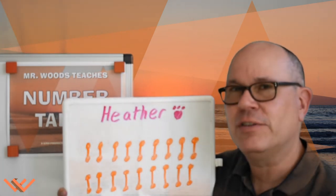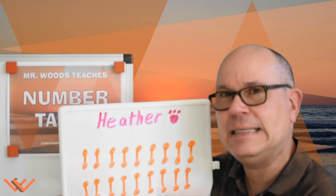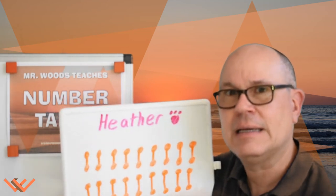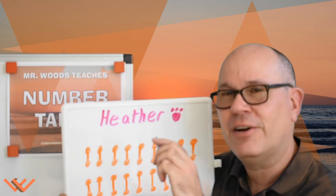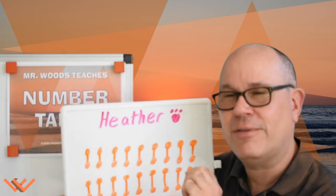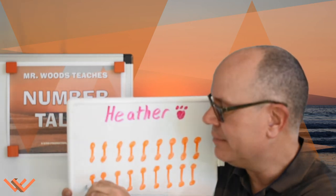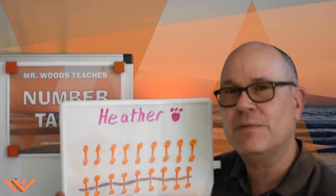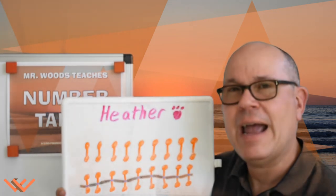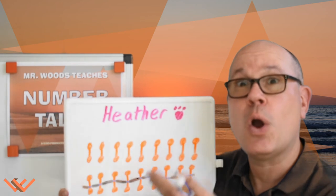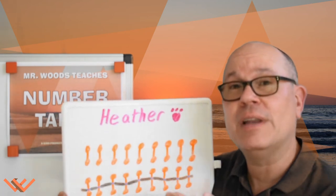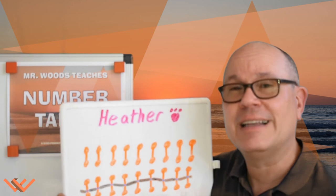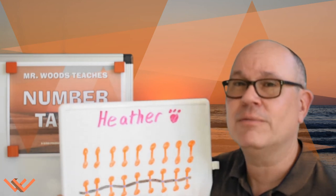Alright, so we know that she started out with 18 dog treats. And her doggy friends ate 9 of them. So we took away one group of 9. How many do we have left? One group of 9. So now we know that there were 9 dog treats left after her party with Sprinkles.